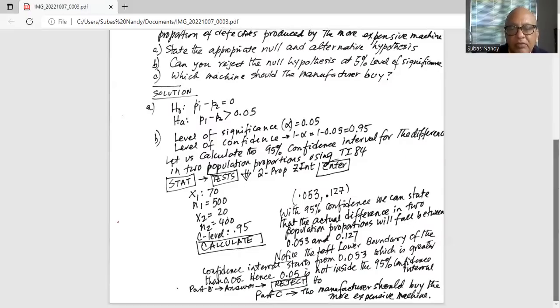Notice the lower boundary of the confidence interval starts from 0.053, which is greater than 0.05. That is the hypothesized value for the alternate hypothesis. Hence, 0.05 is not inside the 95% confidence interval. That means P1 will always be greater than P2 and the minimum is 0.053 of that difference. Therefore, we will reject H0.